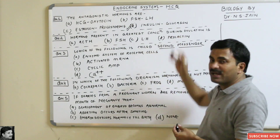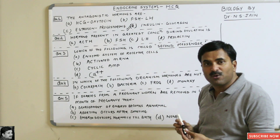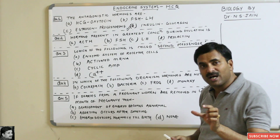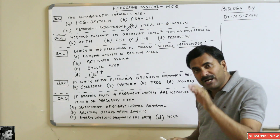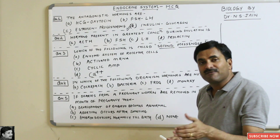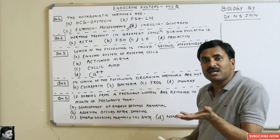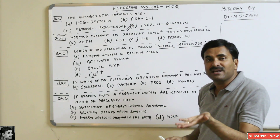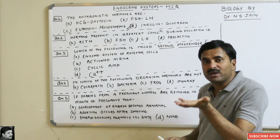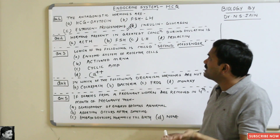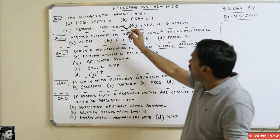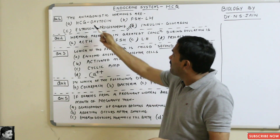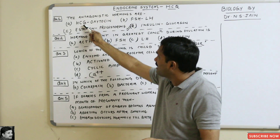The antagonistic hormone pair is option D — insulin and glucagon — because insulin is the hormone which reduces the blood sugar level, while glucagon is actually increasing the blood glucose level. So we can say they are working antagonistic to each other.